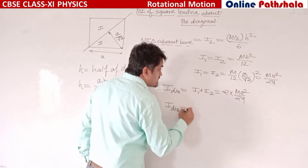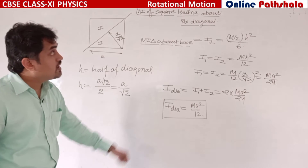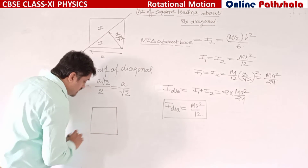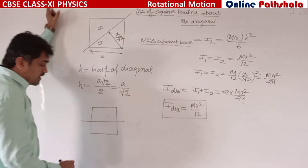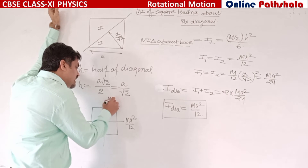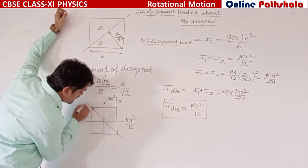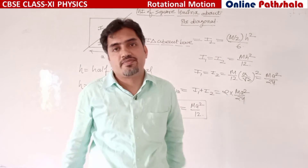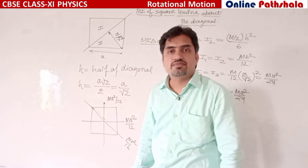The moment of inertia about the diagonal of a square lamina is ma²/12. What we get from this is that the moment of inertia about any axis in the plane of this square — whether horizontal or about the y-axis — is also ma²/12.